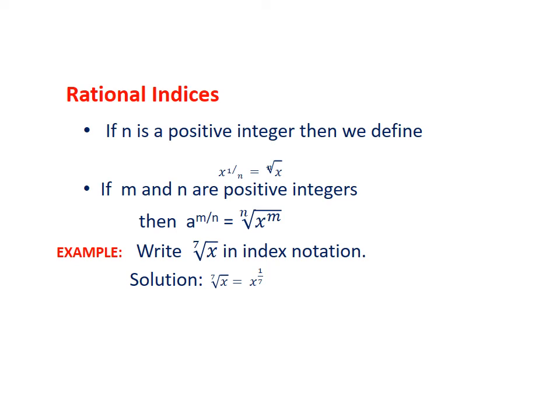Example: Write 7th root of x in index notation. Solution: 7th root of x = x^(1/7). Keep in mind, the radical is 7 outside the radical sign. We simply write 7 as 1/7 in index form, so getting answer 7th root of x equals x^(1/7).